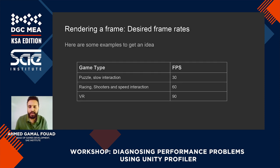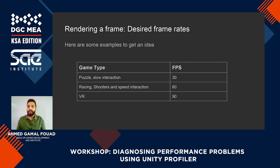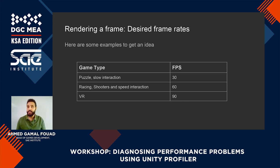Based on the game type, you should be aiming for different frame rates. If it's a very slow game that doesn't need a lot of interaction — like puzzle games, for example — then 30 frames per second is going to be enough, and this saves performance budget for other things. If you're playing a racing game or a shooter where it needs a lot of speed and quick reaction, then you need to aim for at least 60 frames per second, because this split second makes a huge difference in every decision the player takes.